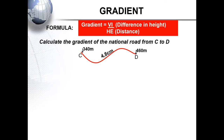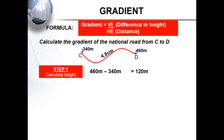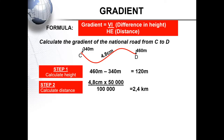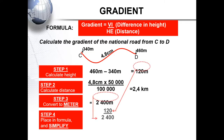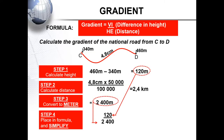Our formula for gradient is vertical interval — your difference in height — over your horizontal equivalent or distance. In this example, you first calculate the height: 460 meters subtract 340 gives your difference in height of 120 meters. You then determine the distance. Very importantly, in gradient everything has to be in meters — therefore convert your 2.4 kilometers to meters. Place everything in your formula and simplify.